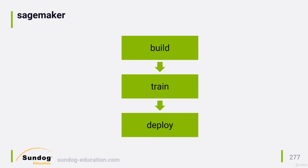It's pretty easy to start using SageMaker. You just push a button in the AWS console to start a new notebook instance, and a hosted Jupyter Notebook environment will be spun up for you, with access to all of SageMaker's built-in algorithms. You can spin up environments that include most any deep learning framework you want to use, such as TensorFlow or Apache's MXNet.